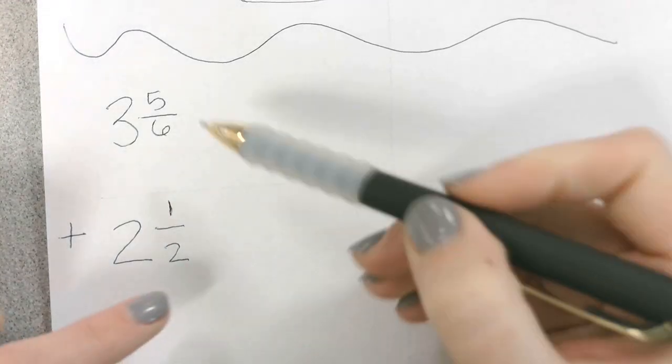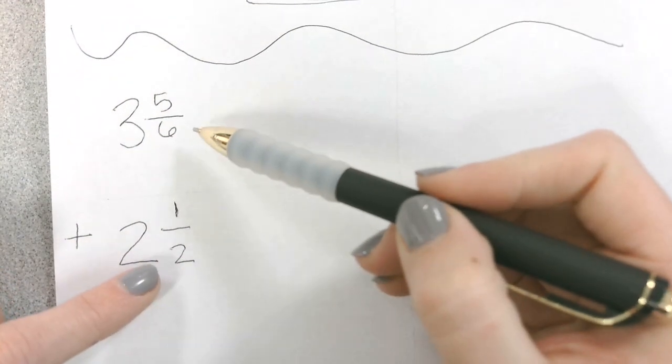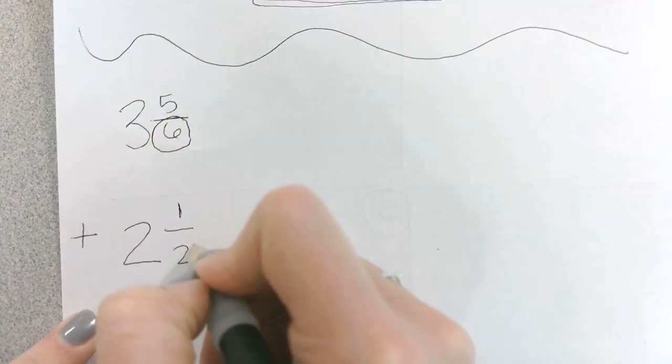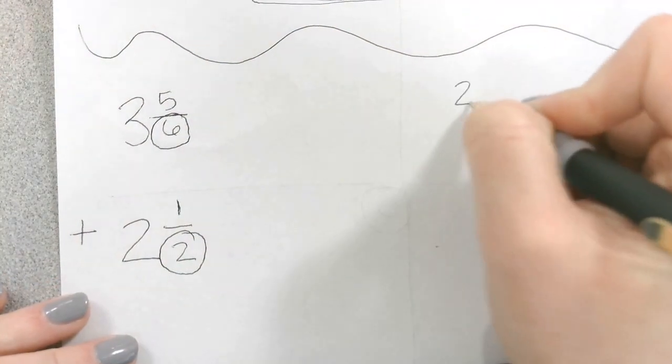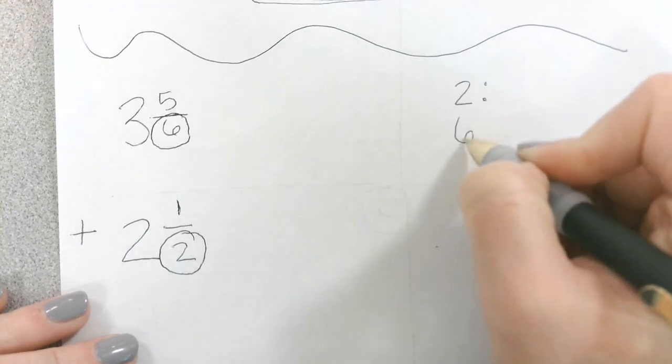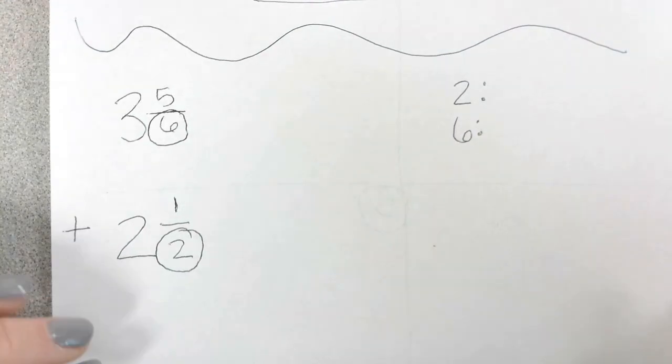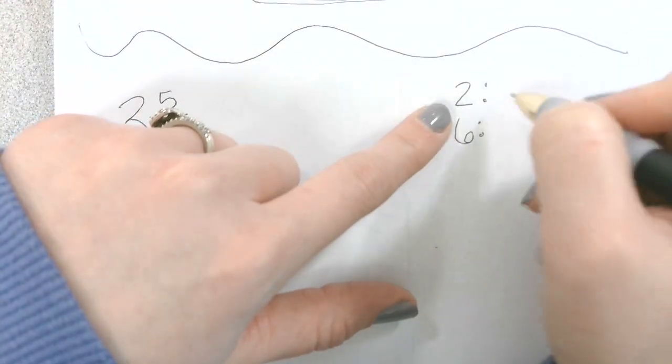Okay. We notice that our denominators are not the same. They are unlike, so I want you to circle those two denominators, 2 and 6. We're going to go over here and list the multiples of 2 and 6 until we see something that is in common, starting with the smallest denominator first.